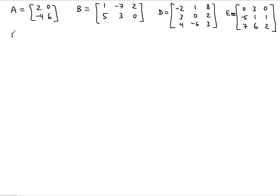Using the given matrices, we want to find certain products or sums. The first thing we're going to figure out is AB, the product of matrix A and B. For AB, we would have to determine if the product is possible.